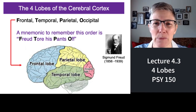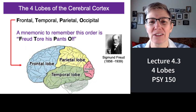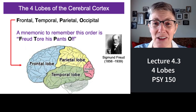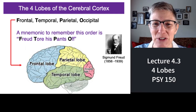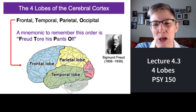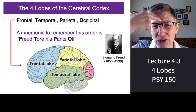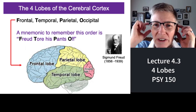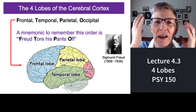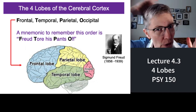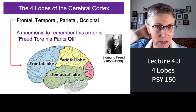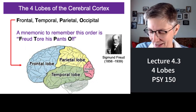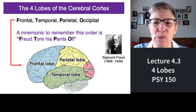There's a mnemonic that people use called 'Freud Tore His Pants Off.' That mnemonic will make more sense once we get to our lecture on Sigmund Freud. Basically, Freud is frontal, tore is temporal. The temporal lobes come a little before the parietal lobe, which would be pants, and the occipital lobe all the way in the back would be off.